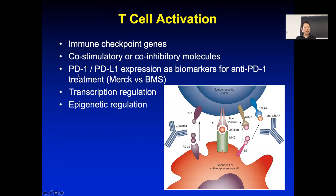PD-1 and PD-L1 are both immune checkpoint genes and are important biomarkers for the current immune checkpoint inhibitor treatment. For example, Bristol-Myers Squibb was the first company that made a PD-1 antibody available and FDA approved. Later on, Merck also had a PD-1 antibody, and initially when they were tested in melanoma patients, they actually all worked very well.